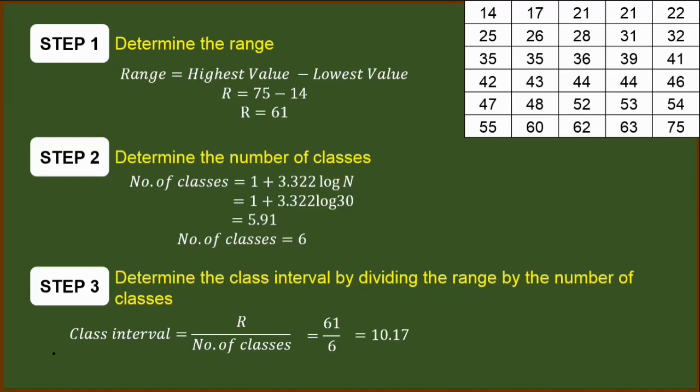Just substitute the value. We have 61 for R and the number of classes is 6. Dividing them, we have 10.17. Again, we cannot use a decimal number for class interval. However, in class interval, we have to follow this rule that if a certain number exceeds an integer, it is automatically rounded to the next integer. It means we will defy the rules in rounding off, meaning this 10.17 will automatically be considered 11. If a certain number exceeds its own integer, then it is rounded off to the next integer.